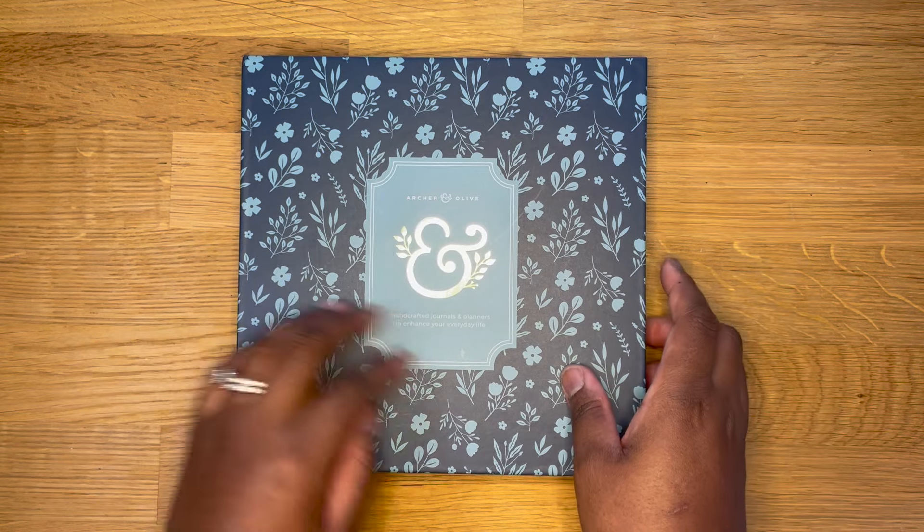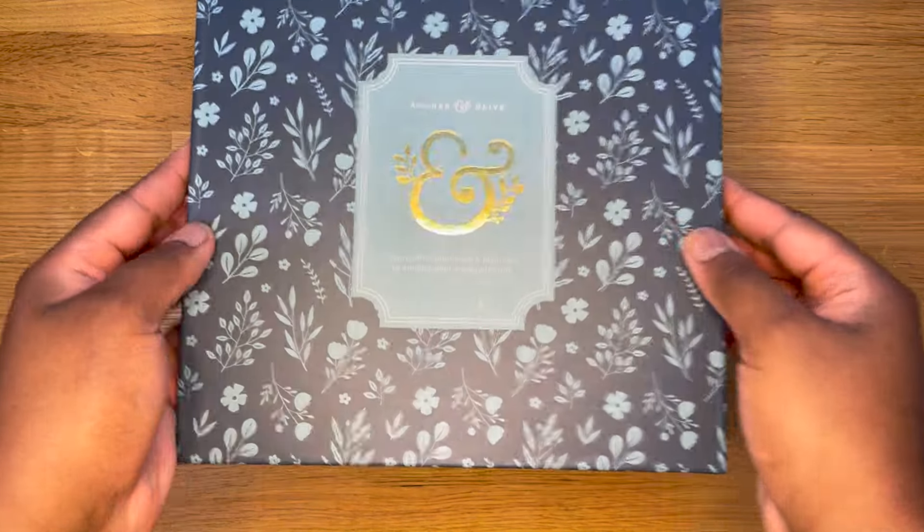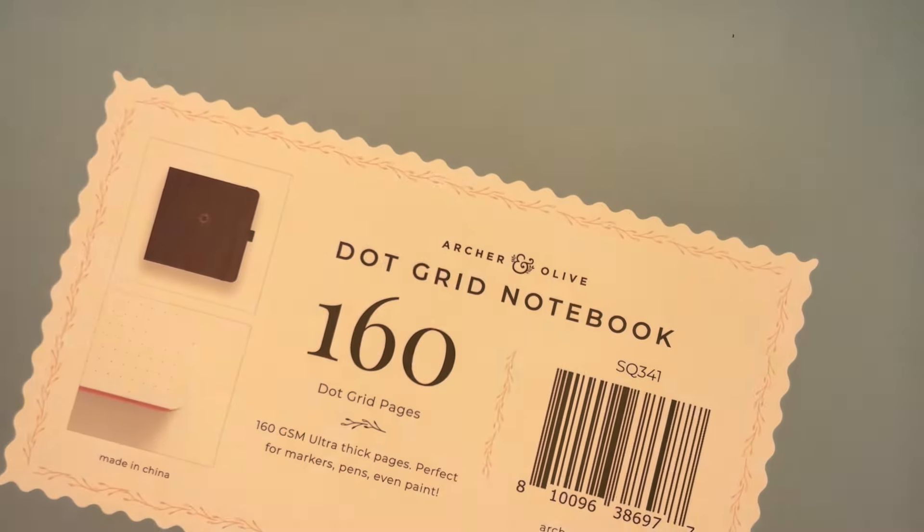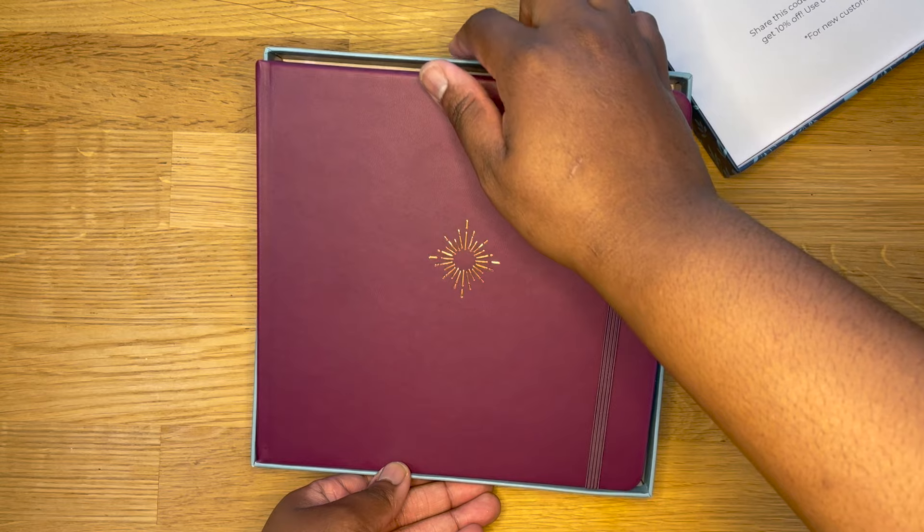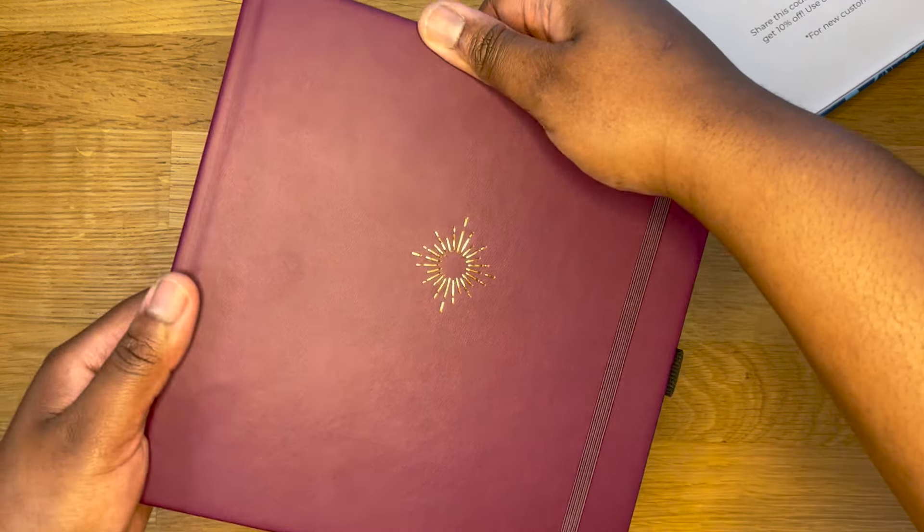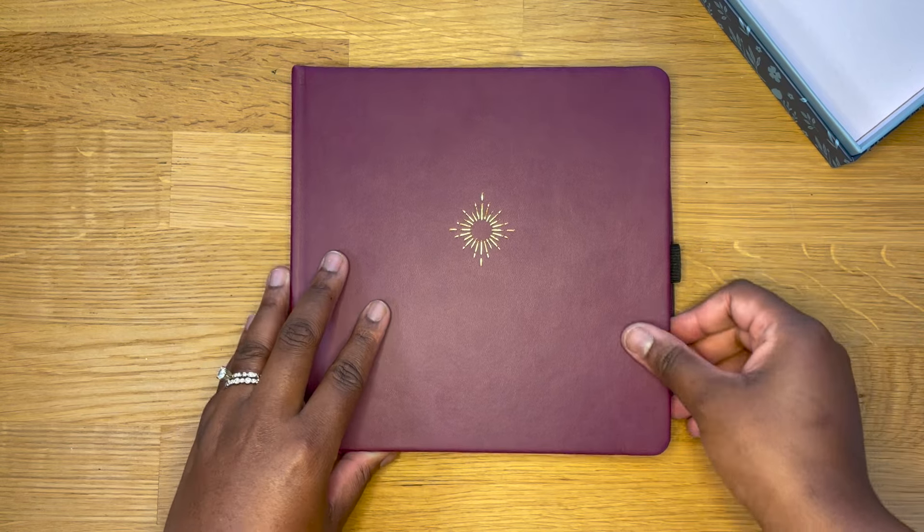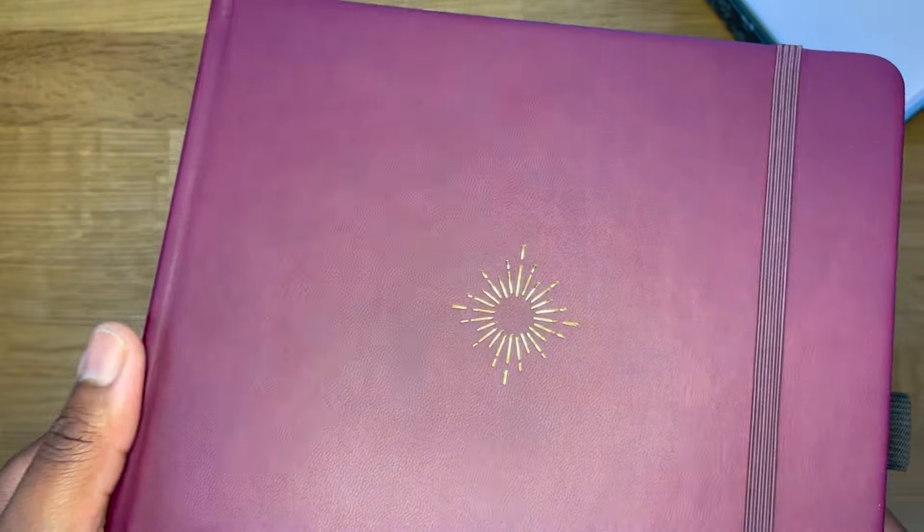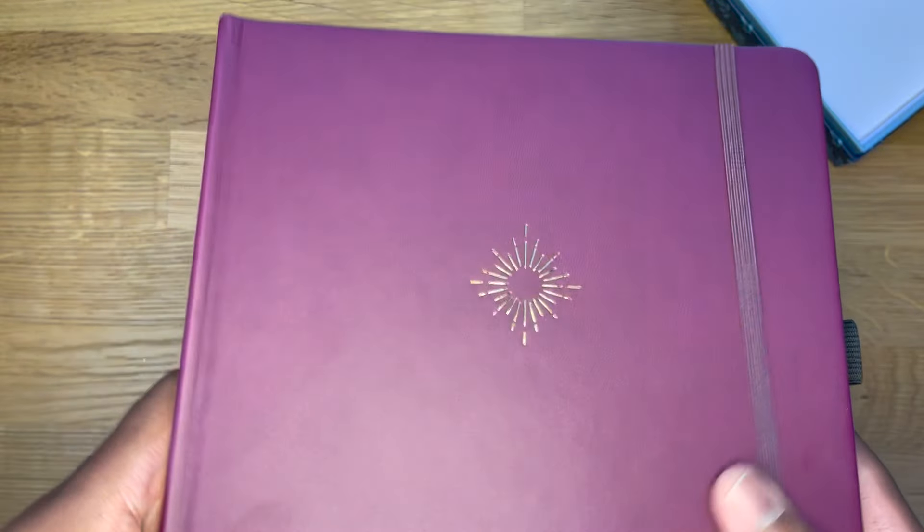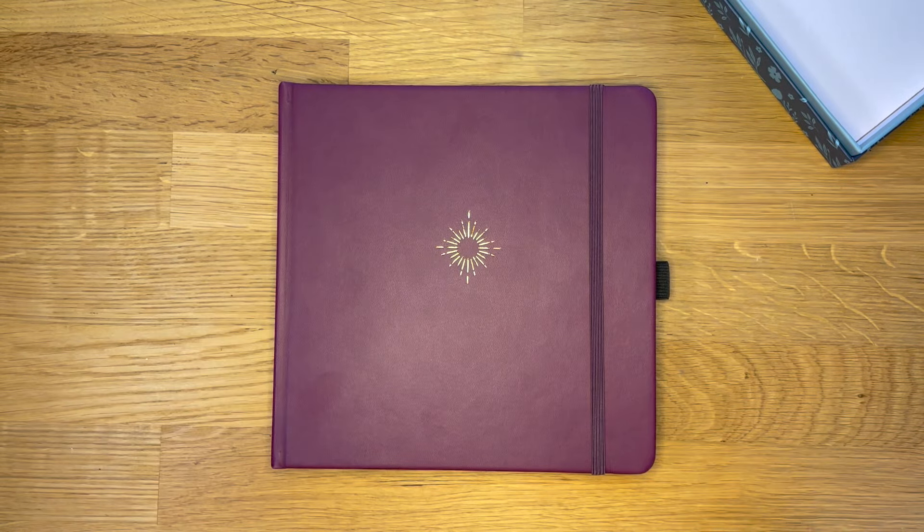By the way, I am using this 8x8 dot grid notebook from Archer and Olive. This is their North Star design and it has 160 pages. It says it's purple but it's really like this burgundy-ish, kind of purple color. To be honest, I kind of bought this by accident. I thought this was the linen fabric cover but it was the vegan leather cover, and I don't really like the way it feels.